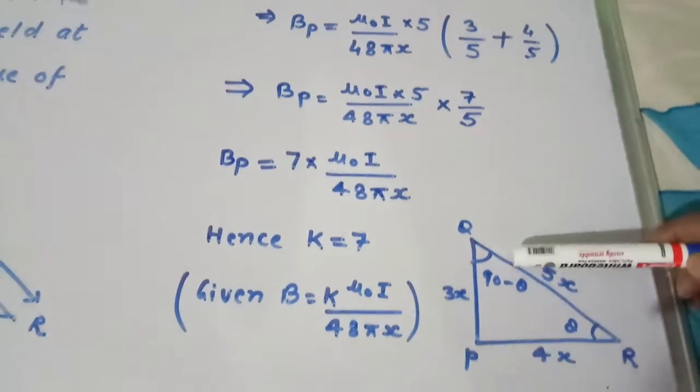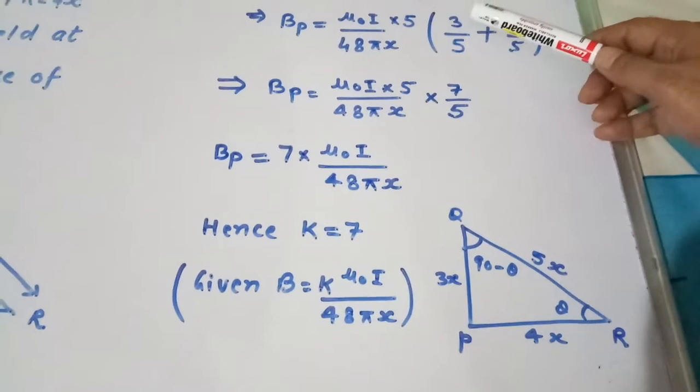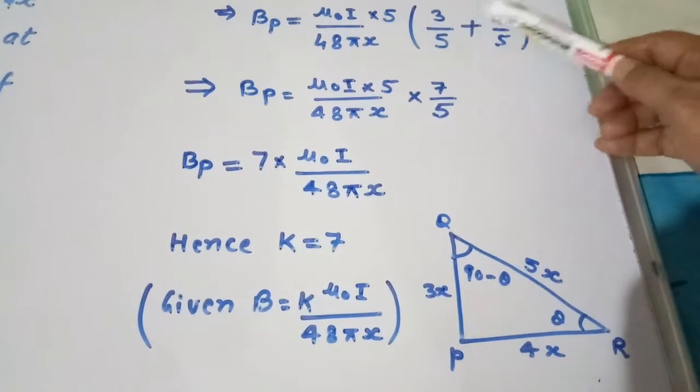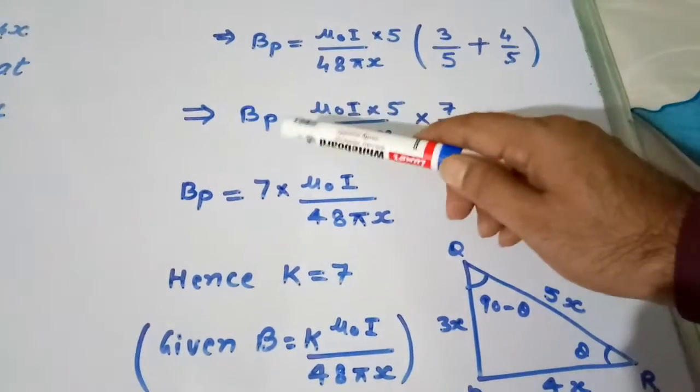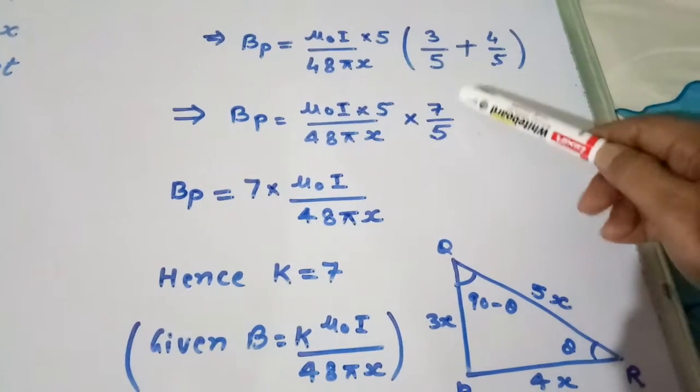So XX will cancel out, so we will get 3 by 5 plus 4 by 5. We simplify it, it becomes 7 by 5. So we get BP equal to μ₀I times 5 divided by 48πX into 7 by 5.